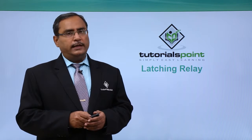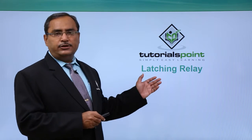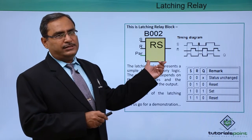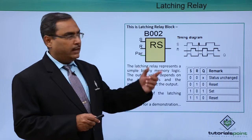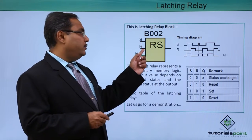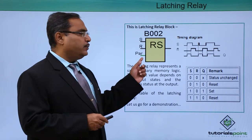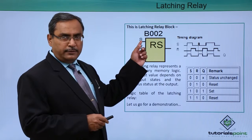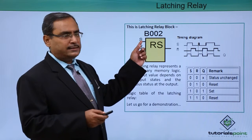We are going to discuss the block that is the latching relay. Now what is a latching relay? This is the block diagram of the latching relay, also known as the RS latching relay. Here we have the input set and the input reset, and we can set some parameters if required. This latching relay is nothing but an SR latch or RS latch.